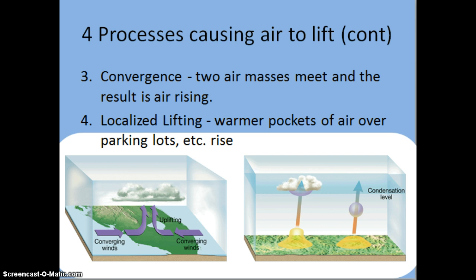The last two lifting mechanisms are convergence and localized lifting. With convergence, two air masses meet and converge, causing air to rise because it has nowhere else to go. We will discuss air masses and fronts in the next module. With localized lifting, an area like a parking lot with a lot of asphalt heats up very quickly, causing warm pockets of air to rise and then form clouds.